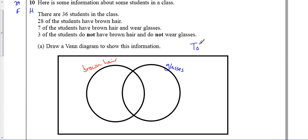We know the grand total is 36. It says seven students have brown hair and wear glasses. So, right in the middle, we know there's seven students. So, let's cross that one off. It says three of them don't have either, so I'm going to put three on the outside.